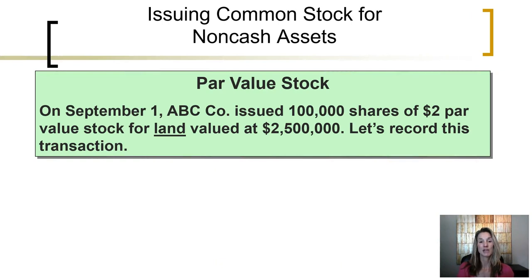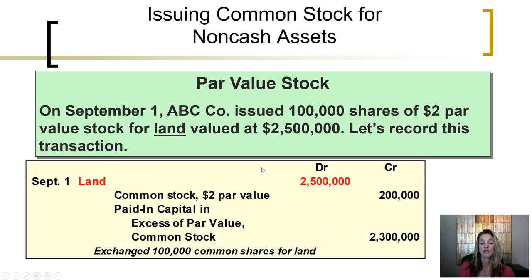Corporations can issue stock for something other than cash as well. If on September 1st, ABC issues 100,000 shares of $2 par value common stock, and instead of receiving cash they are issuing it in exchange for land valued at $2.5 million — whoever owns the land has invested it with the corporation and in exchange received stock — instead of recording an increase to cash, we record an increase to land because the corporation now owns land, $2.5 million. The amount recorded into the stock account is just the par value: 100,000 shares at $2 par value, total par value of $200,000. The excess paid in over par is $2.3 million, recorded in paid-in capital in excess of par on common stock.